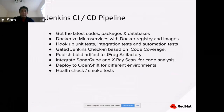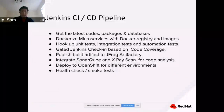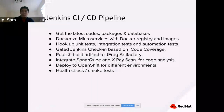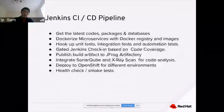The Jenkins CI/CD pipeline gets the latest code from the Git repository, Dockerizes the microservices with Docker registry and images, and hooks up unit tests, integration tests, and automation tests to the pipeline. With Jenkins gate checks, you can reject any code change that failed a test or did not meet a specific code coverage number. Build artifacts get pushed to artifact repositories such as JFrog. The Jenkins pipeline also supports static analysis and security scanning to catch vulnerabilities. Jenkins also supports deploying to different OpenShift environments, followed by health checks and smoke tests to validate the deployment.